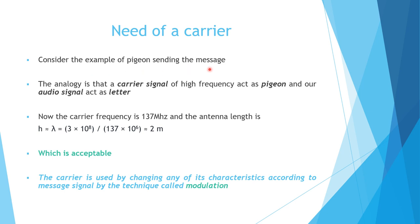Consider the pigeon example again: the high-frequency carrier signal acts like the pigeon, and our audio signal acts like the letter. If we take a carrier frequency of 130,000 MHz, the antenna length becomes about 2 meters — which is practical. This indicates we need a carrier of high frequency to carry the low-frequency message from one place to another. The carrier is used by changing any of its characteristics according to the message — a technique called modulation.